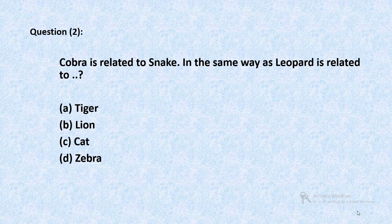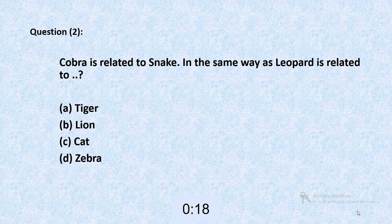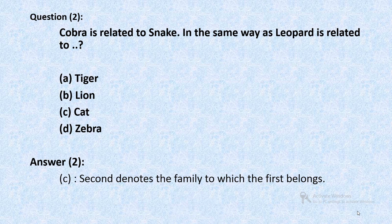Question 2: Cobra is related to snake in the same way as leopard is related to — tiger, lion, cat, or zebra? The answer is C. The second denotes the family to which the first belongs.